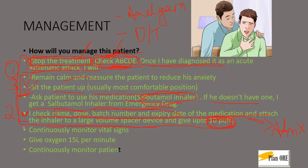The third part is common to all medical emergency scenarios: you will continuously monitor vital signs, give oxygen at 15 liters per minute, and continuously monitor the patient. So in the last part you are monitoring whether your drug is acting and giving oxygen with a proper dose. In summary, your management is divided into three parts: stopping the treatment, remaining calm, and positioning the patient; giving the drug at a proper dose and oxygen; and monitoring the patient.